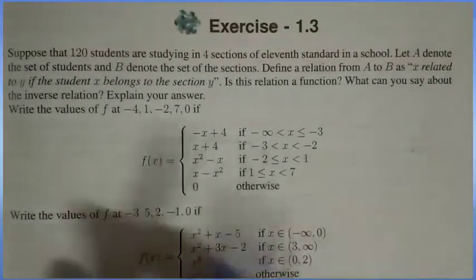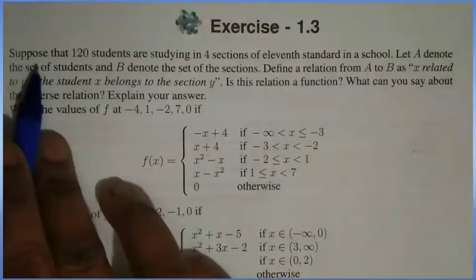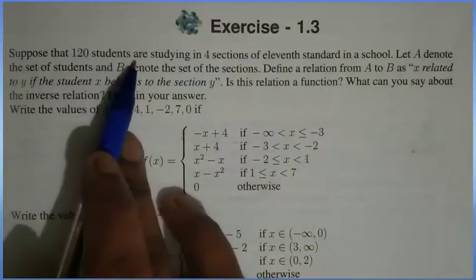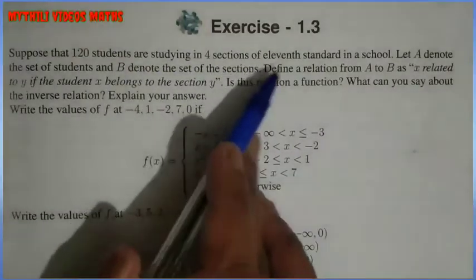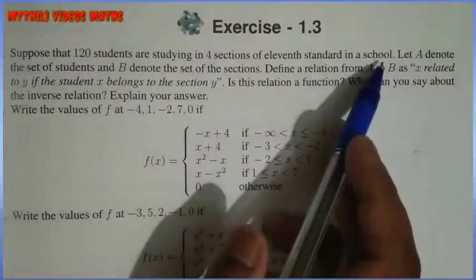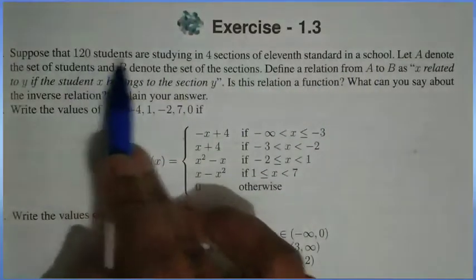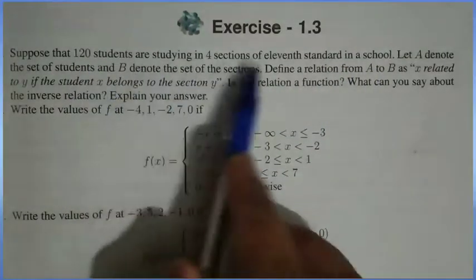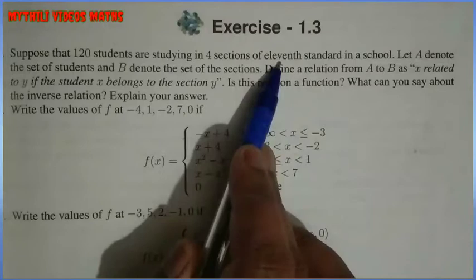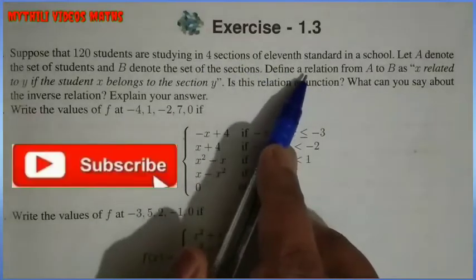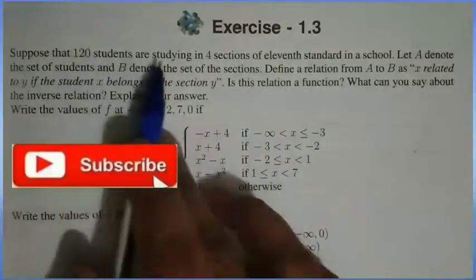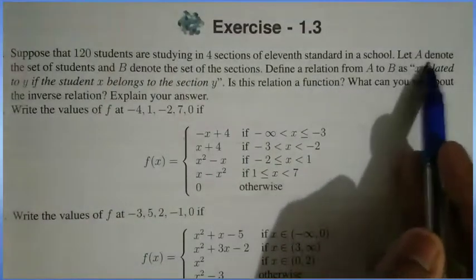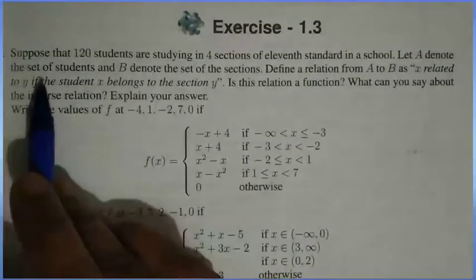In Exercise 1.3, the first sum is given: suppose that 120 students are studying in 4 sections of 11th standard in a school. So 120 students studying in 11th standard are divided into 4 sections. So let A denote the set of students and B denote the set of sections.